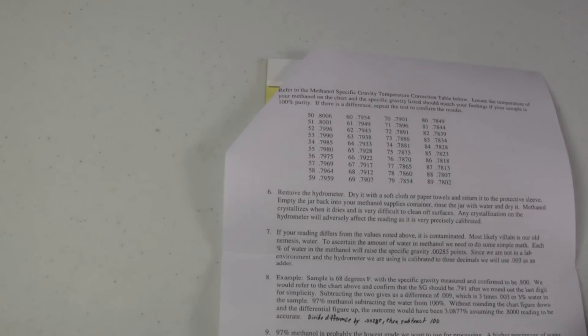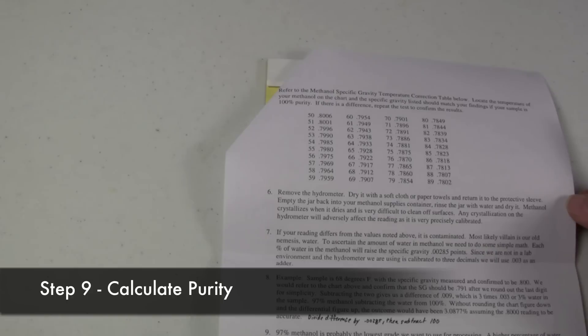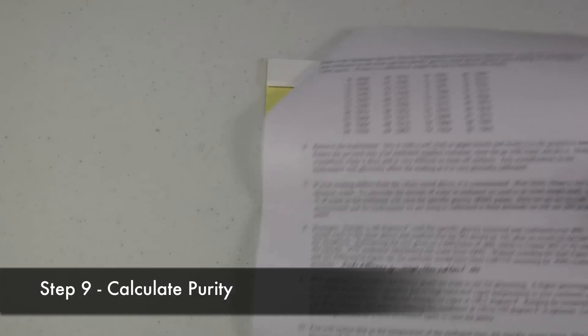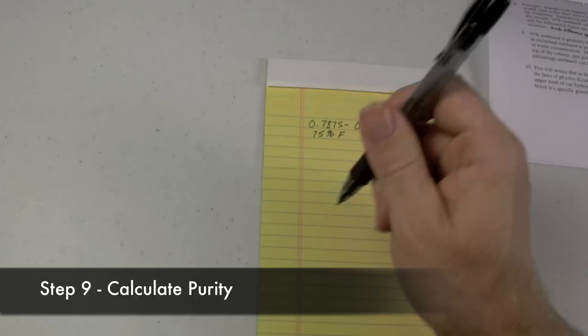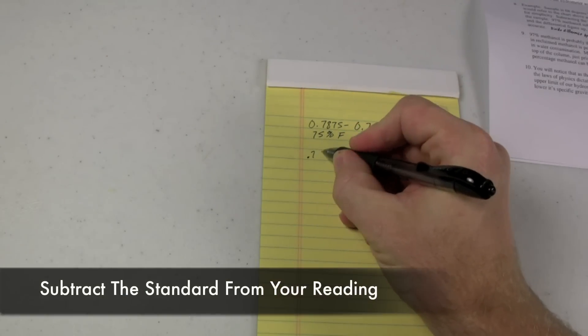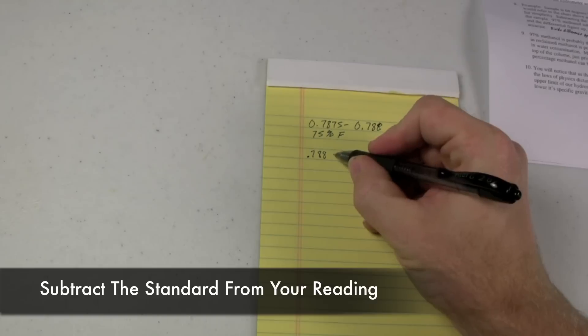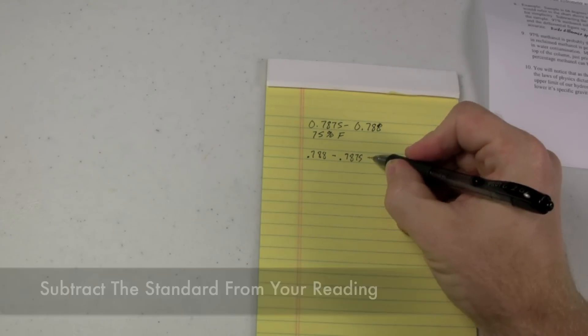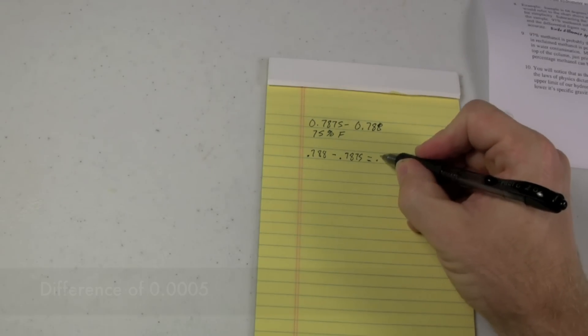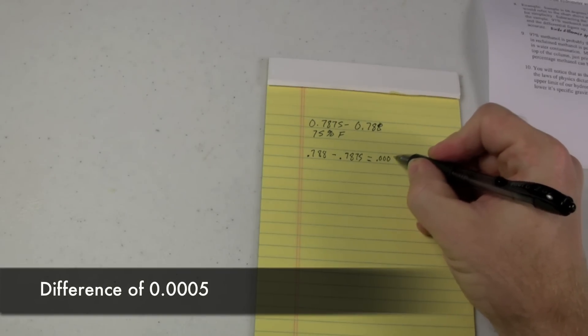For the calculation purposes, let's go ahead and say that it's .788. So the way that you calculate your methanol is you would take the reading that you got, .788, and you subtract from it what it should be, .7875. That equals .0005.